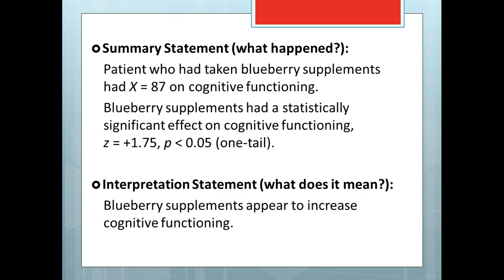Please note that both lecture examples happen to result in the decision to reject the null hypothesis. If we were to fail to reject the null hypothesis instead — or have the Z-score fall just outside of the critical region — the summary and interpretation statements would look different. Refer to the lecture handout for details.